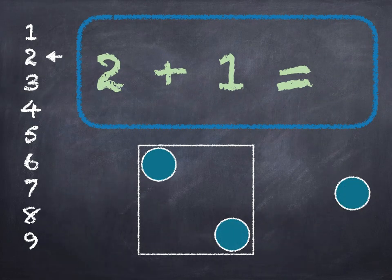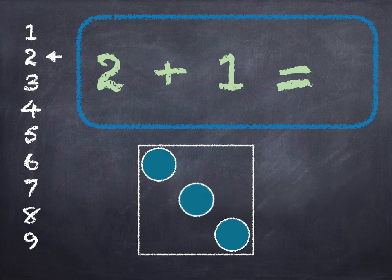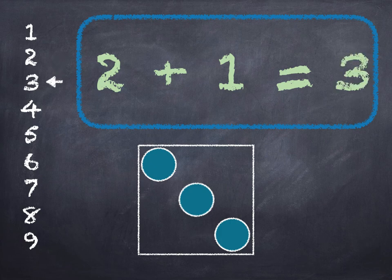2 in the box, add 1 on. 2, 3. Start at 2 on the number line, go down 1, we get to 3. 2 plus 1 is 3.